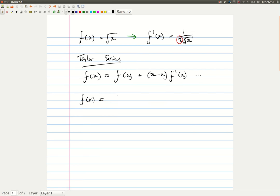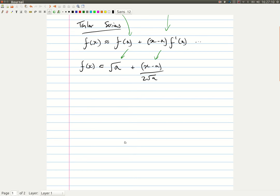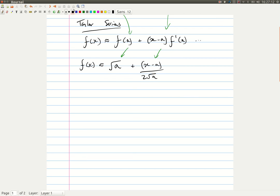But we are going to substitute in a. So f of a is root a plus x minus a over 2 root a. So we're just from here to here. Right. And obviously we can continue.